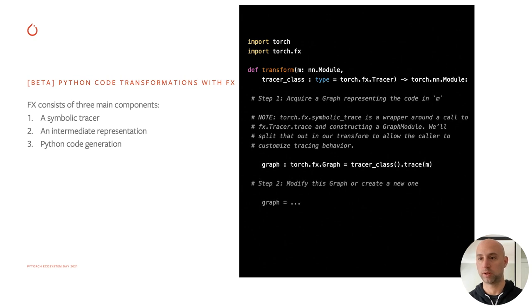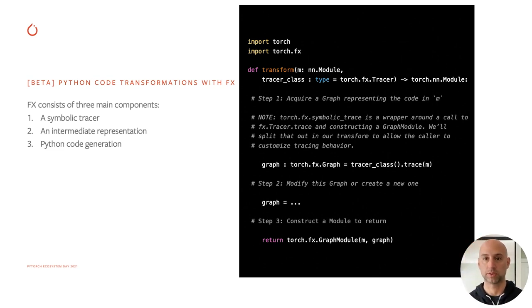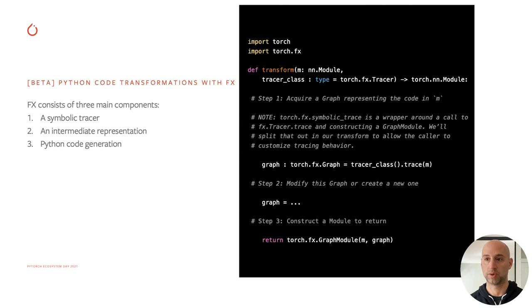The torch.fx toolkit has three components: a symbolic tracer, an intermediate representation (IR) called fxir, and a code generator in Python. So really three steps: acquire a graph, write a transformation or pass, and generate a new module. We see this is great for implementing things like quantization — the new graph-mode-based quantization released in prototype actually uses this under the hood, called fx graph mode quantization. We've also seen improvements in performance, such as writing passes to get latency benefits when serving models. Please check it out and give us feedback.